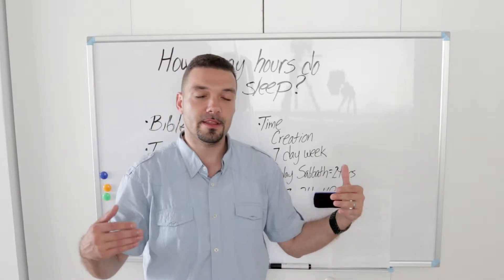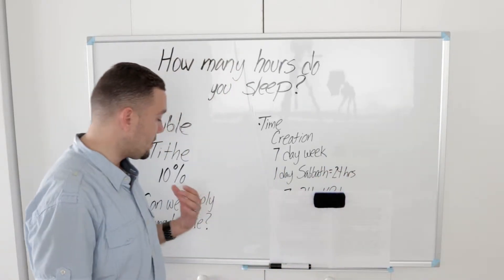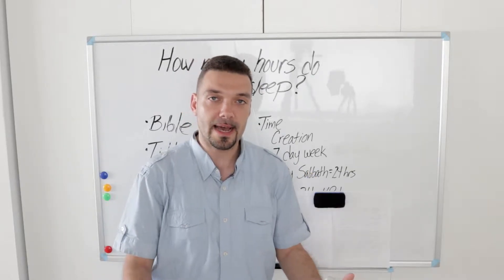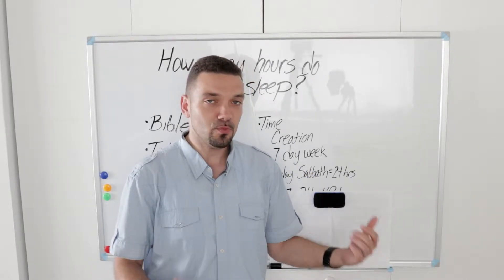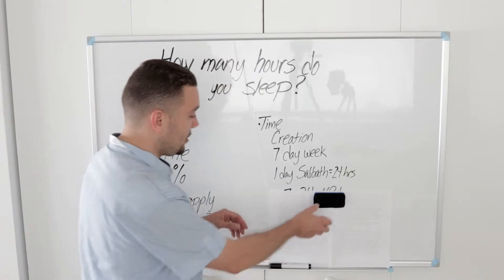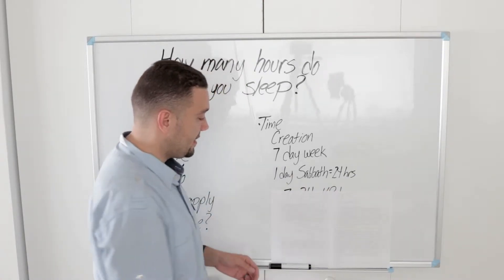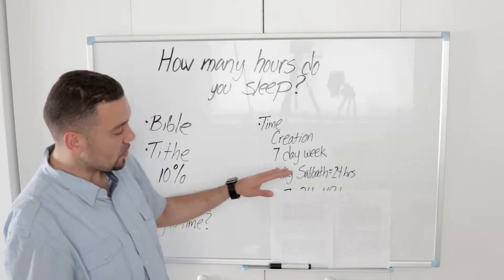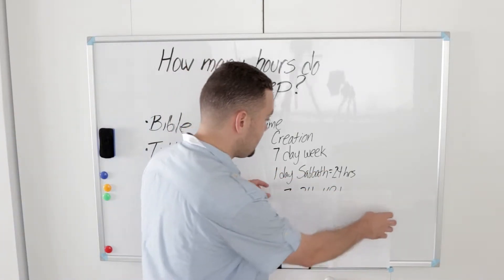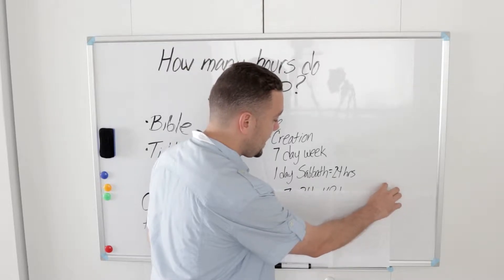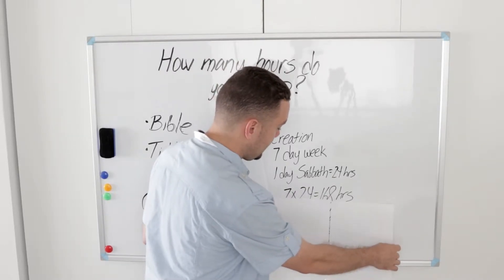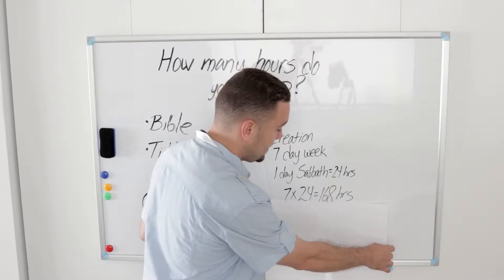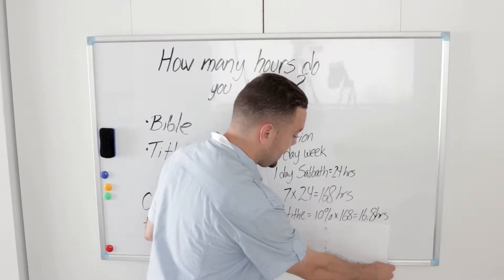I started thinking: if we're tithing our money, if we're tithing our efforts, showing that with 10%, can we apply this concept to time? If you have one week, that's seven days. You take seven days and multiply it times 24 hours, and you get 168 hours.